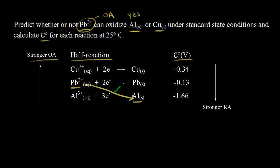Next, let's predict whether Pb²⁺ can oxidize solid copper. An oxidizing agent can't oxidize a reducing agent that appears above it on the standard reduction potential table. If I draw a line from Pb²⁺ to solid copper, we're going up — copper is above Pb²⁺. So our prediction is no, Pb²⁺ cannot oxidize copper under standard state conditions.